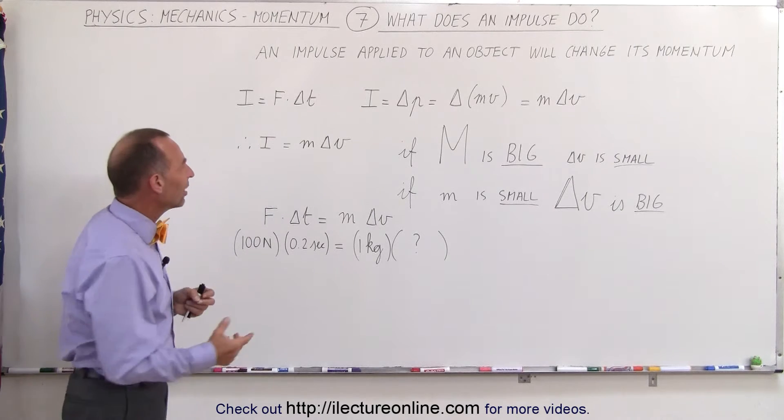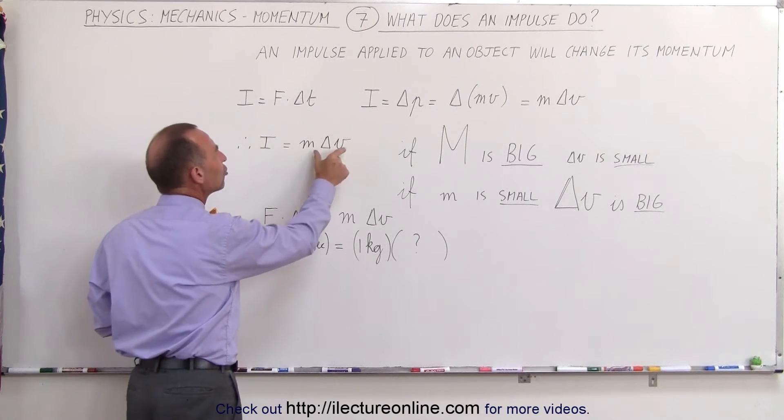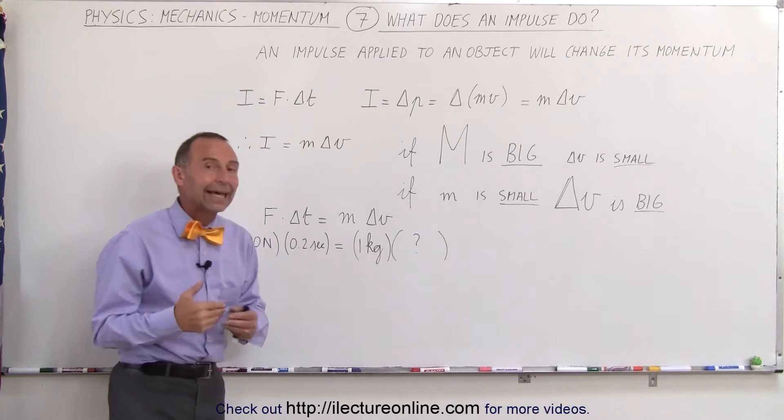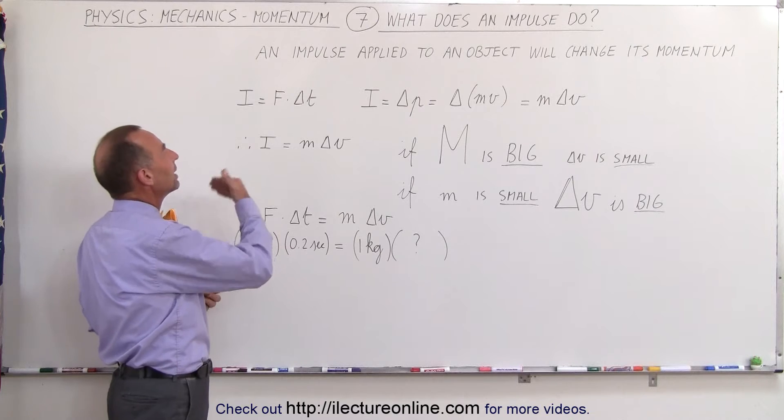Therefore we can say that the impulse is simply equal to the product of the mass times the change in the object's velocity. That's not the definition of impulse, that's simply what the impulse does.